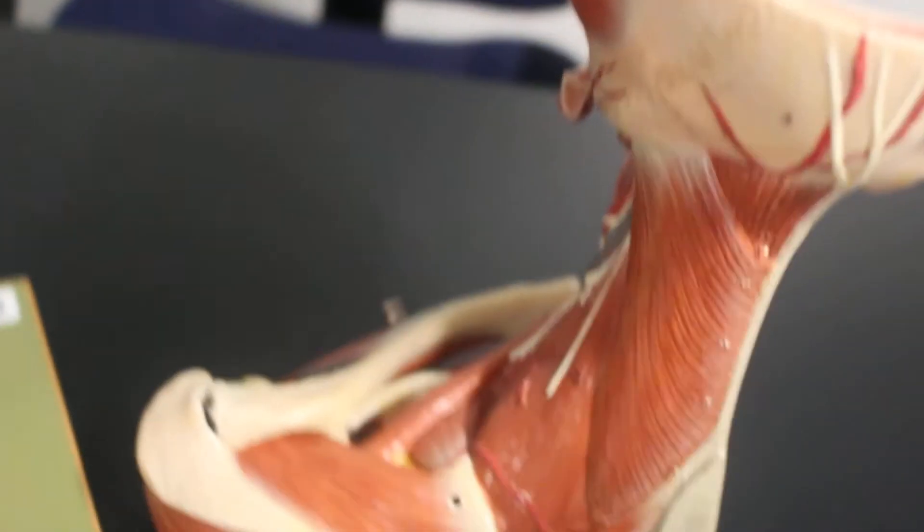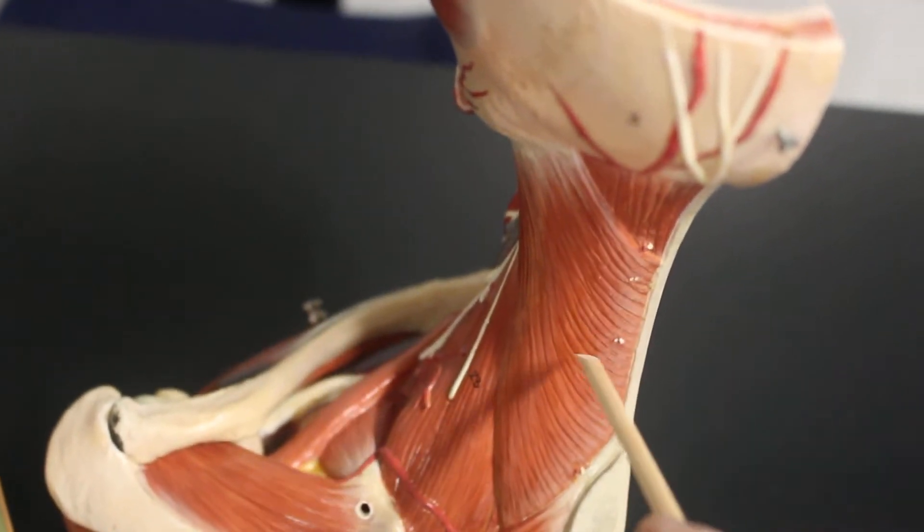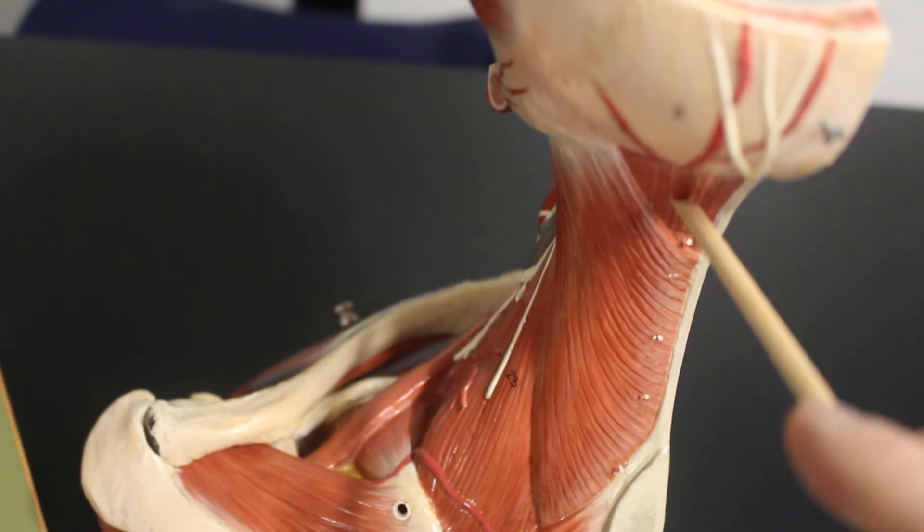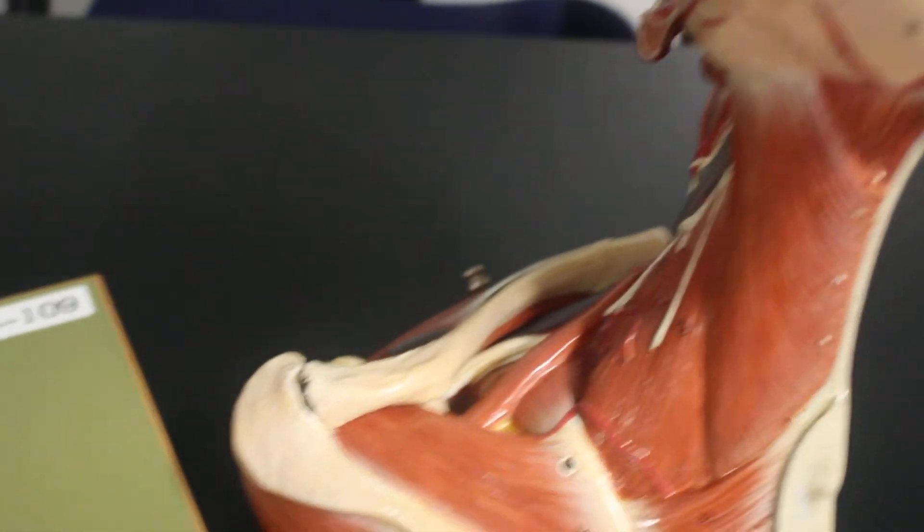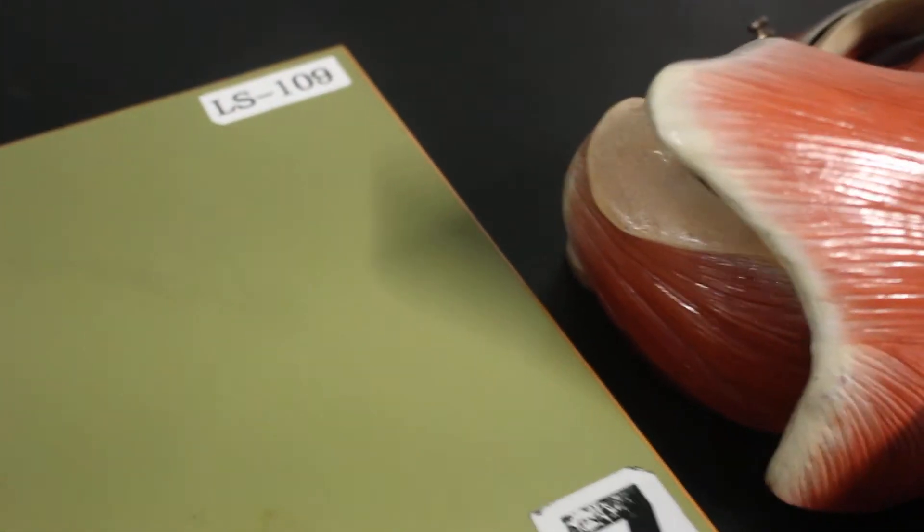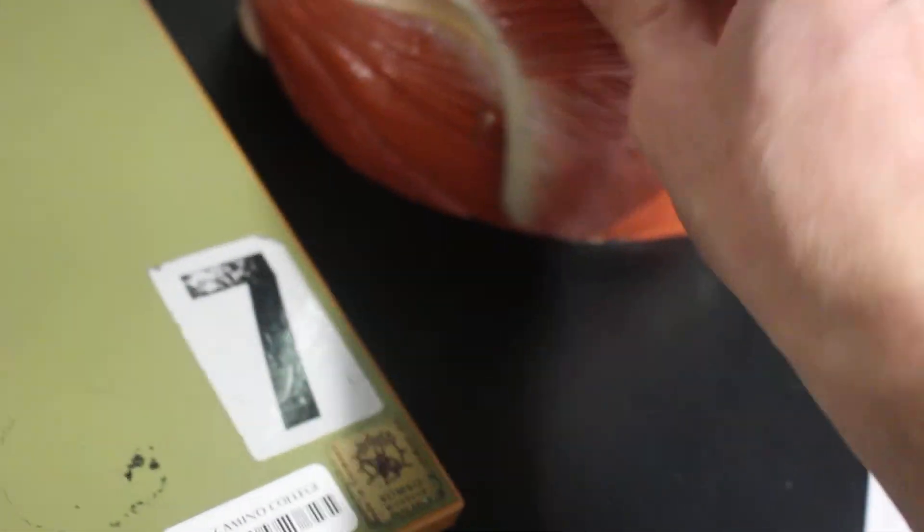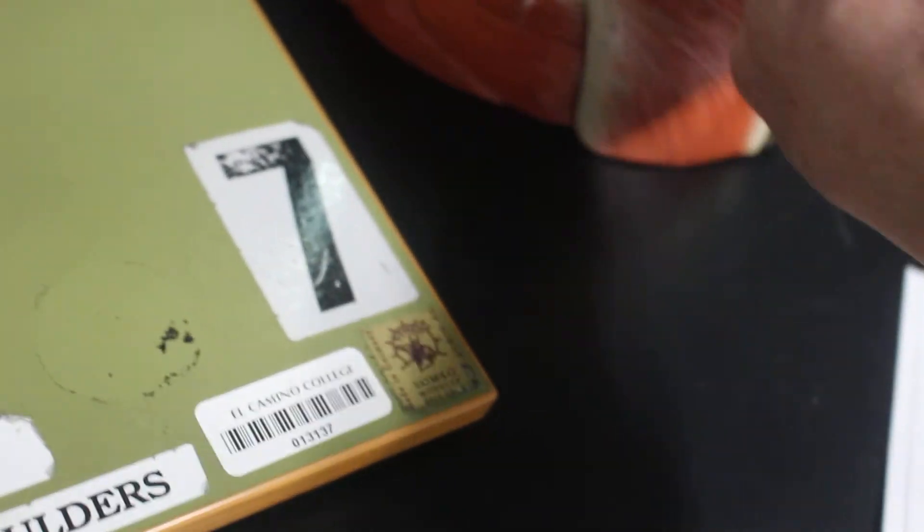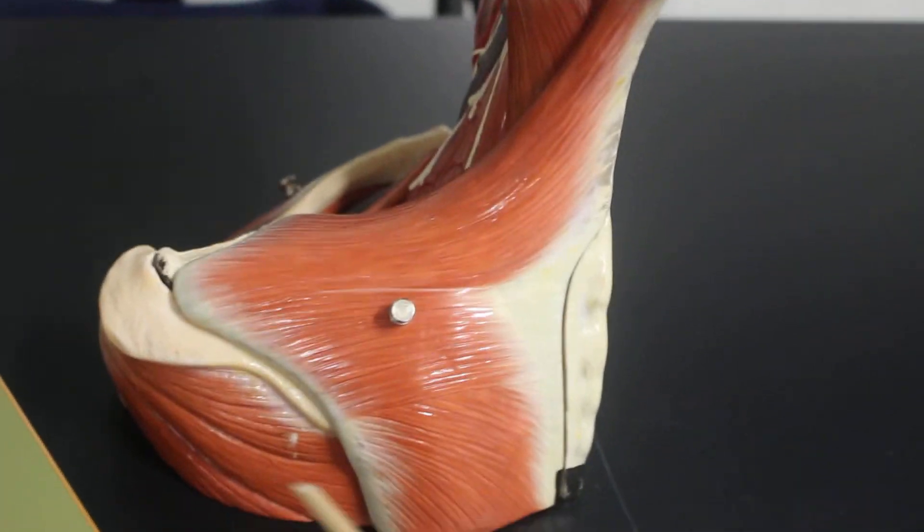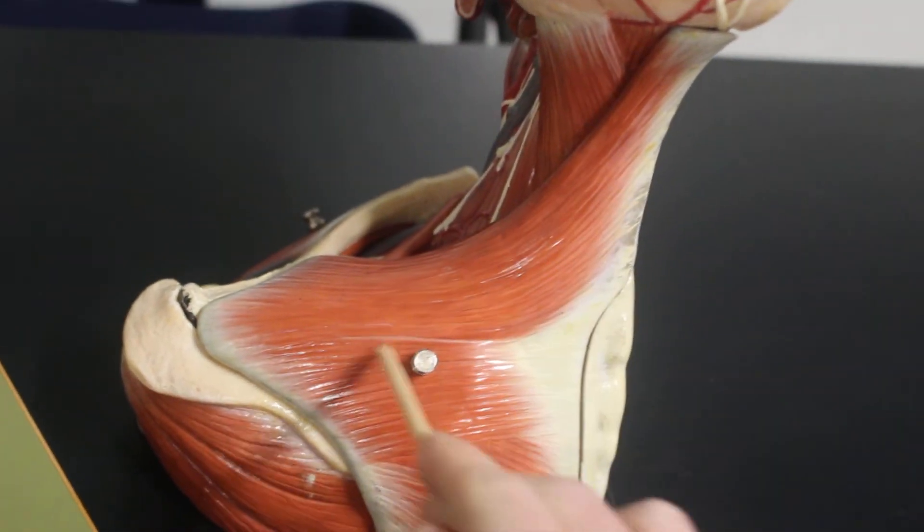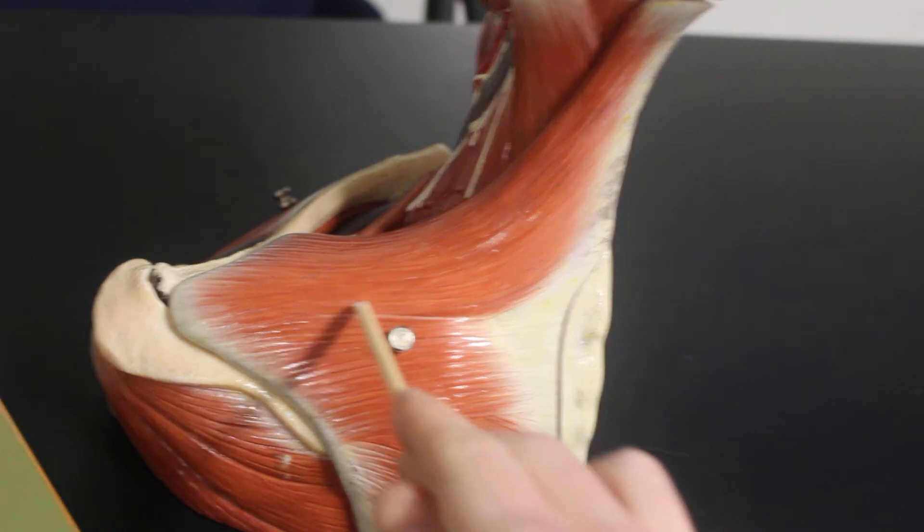Flip the skull around. This is splenius capitis. This is semispinalis capitis. Put this sheet, this big muscle here, back in place. So this big superficial muscle here, all of this is trapezius. That is all trapezius.